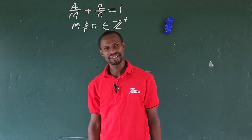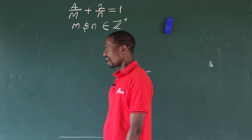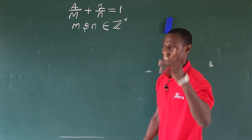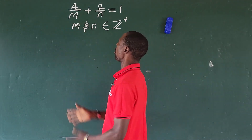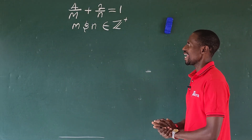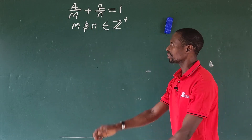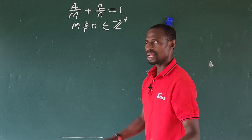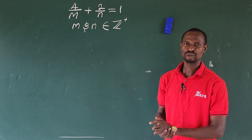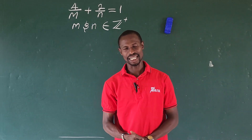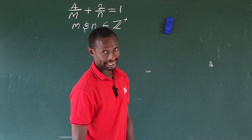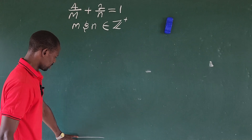Hello everyone, welcome to today's math class. Today we have this question: 4 over m plus 2 over n equals 1, where m and n belong to the set of positive integers. So how do we solve for m and n?